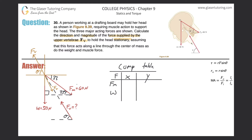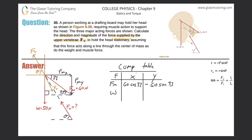So here's our 33°. Now I can find the x and y components. The x-component of the muscle force, F_mx, is a cosine value: 60 × cos(33°). The y-component, F_my, points downward so it's negative: −60 × sin(33°).